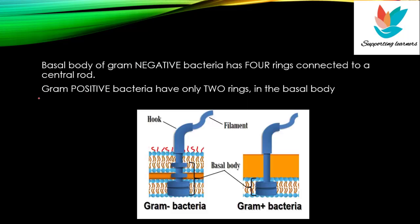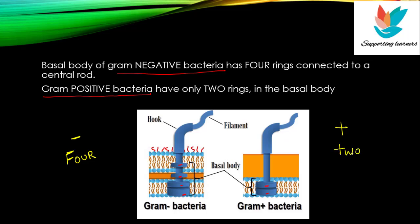In gram-positive bacteria and gram-negative bacteria, the number of rings in the basal body differs. Gram-positive bacteria have 2 rings in the basal body, while gram-negative bacteria have 4 rings. A way to remember this: gram-positive has a plus sign, and the first alphabet of plus is shaped like a cross — so 2 rings for gram-positive. This is a memory trick so you don't forget it.